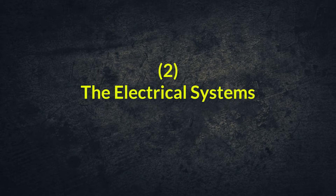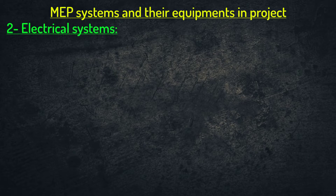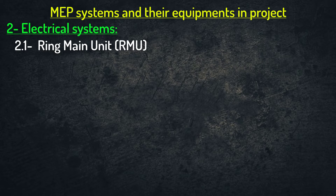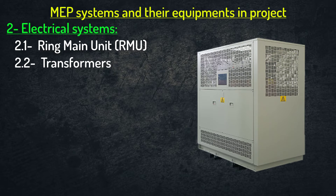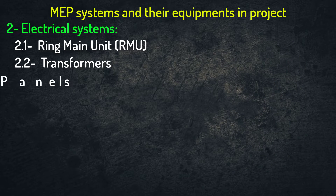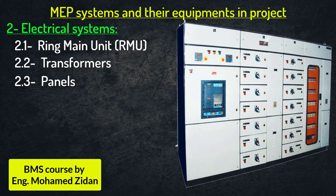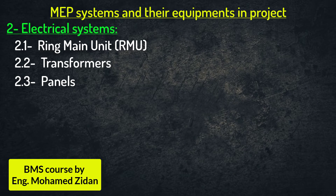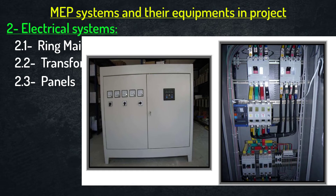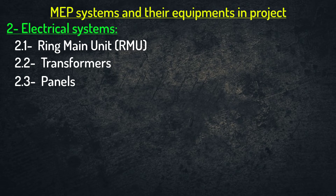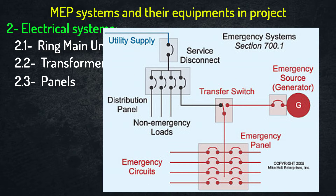The second category of MEP systems is the electrical systems. The most common electrical systems and their equipment found in most projects are as follows. First, ring main unit or RMU. Second, transformers. Third, panels such as main distribution boards or MDB, sub main distribution boards, ETS panels, and final distribution boards — either connected to normal power or emergency power.